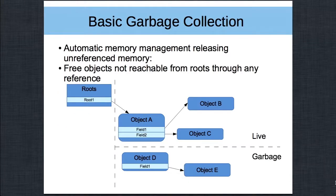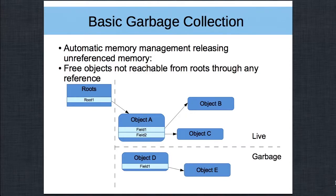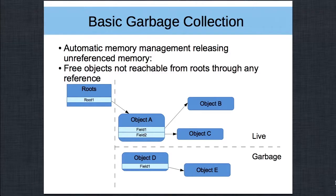What is Garbage Collection? It's known to be automatic memory management releasing unreferenced memory. What it actually does is scan memory from some roots — the global data segment, the stack, or registers — and looks for references to allocations in the heap, and transitively follows these references to all live objects. All objects that are allocated but not referenced are then discarded as garbage.